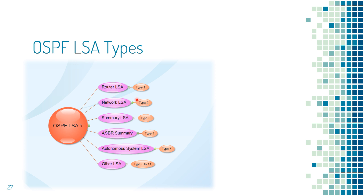Network LSAs are generated by the DR on the multi-access network about the attached routers. This LSA is flooded within the area. To view, use 'show ip ospf database network'. Network Summary LSAs are generated by the ABR to advertise destination information of other areas. This LSA is flooded between areas — that is inter-area. To view, use 'show ip ospf database summary'. The RIB of OSPF will show routes marked with O IA. ASBR Summary LSAs are generated by the ABR to advertise ASBR information, flooded between areas. To view, use 'show ip ospf database asbr-summary'. It informs which router is doing external route redistribution.